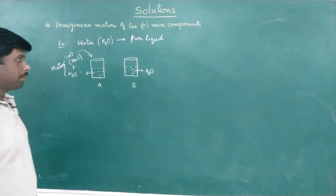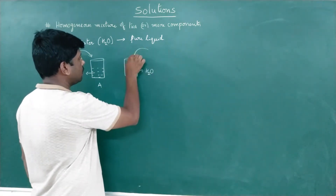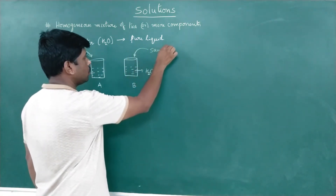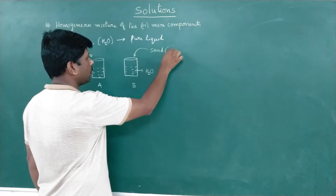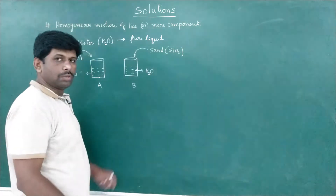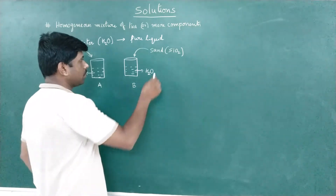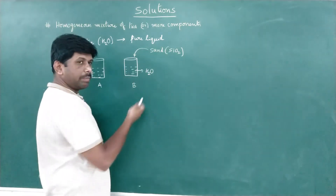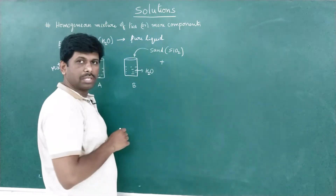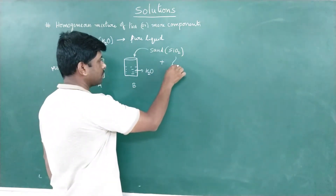Now let us try to add sand, whose molecular formula is SiO₂, to beaker B. After the addition of sand to beaker B, again two chemical components are present, and this is also called a mixture.